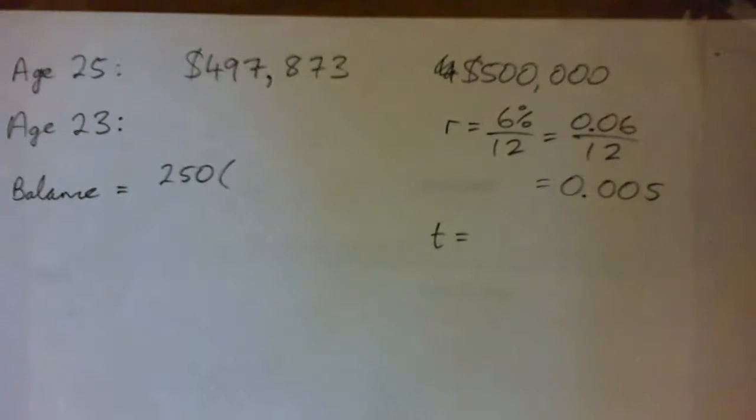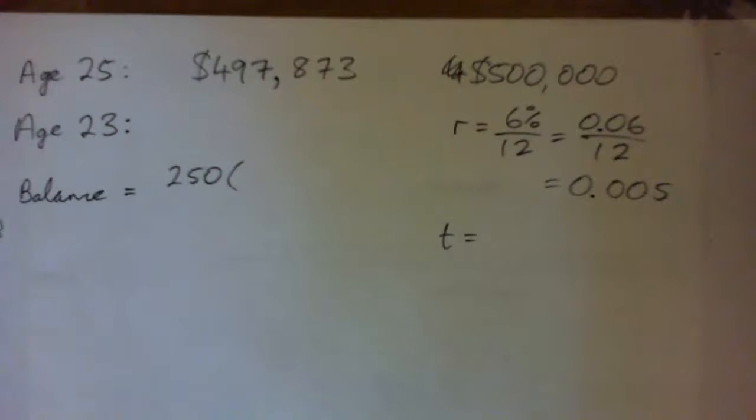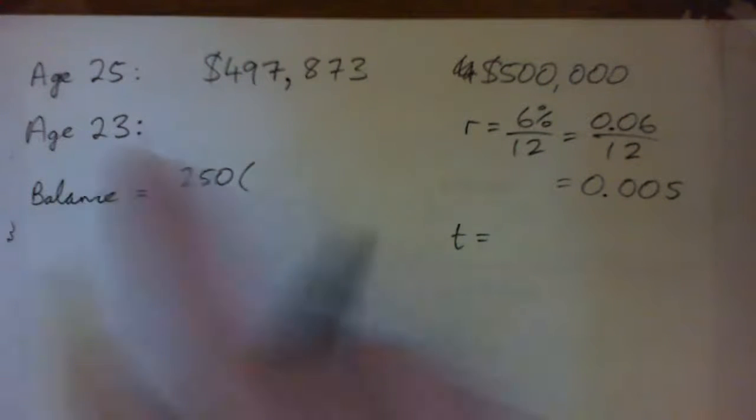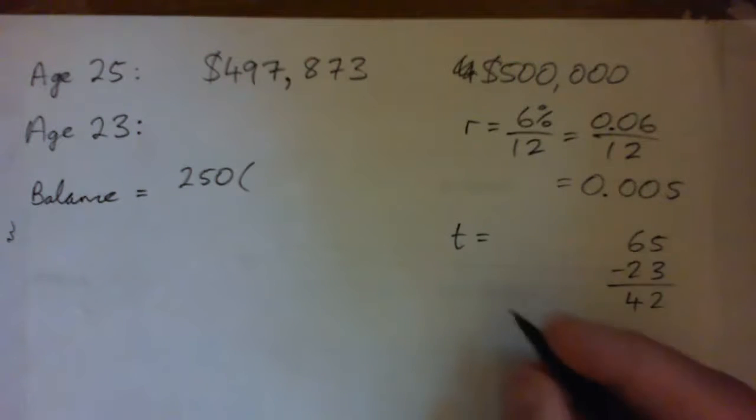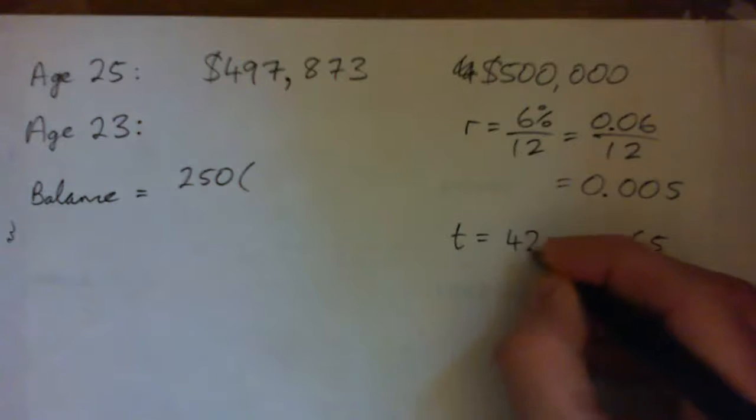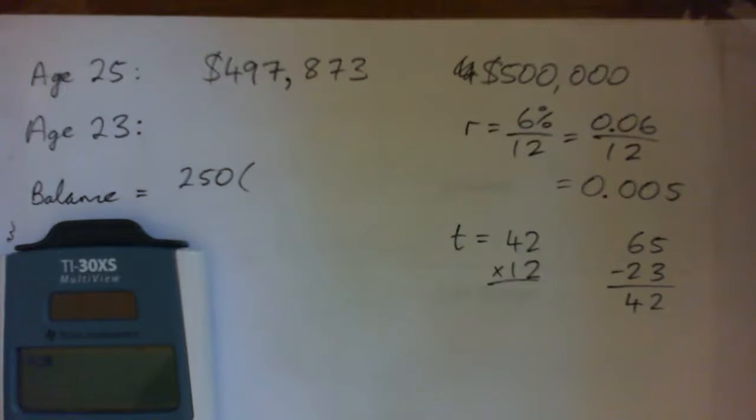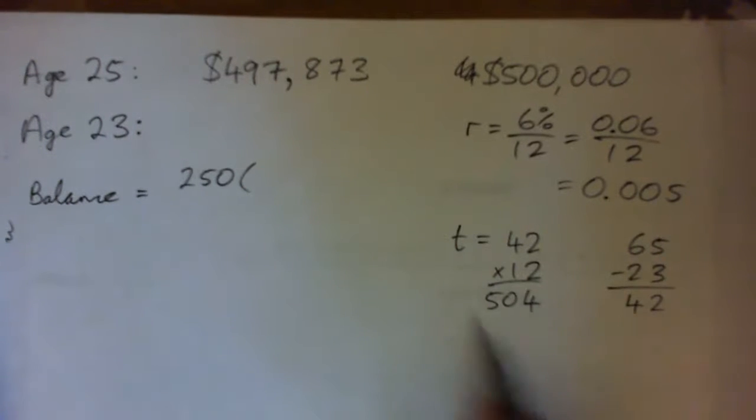Now, T is the number of deposits. The number of deposits every month, and so let's think about this. We're going to work from age 23 to 65. That's 42 years of work, right? So we go 42 times 12 to get the number of months of work. So we're working for 42 years, 42 times 12, 504, right? So that's the T, that's the 504 months.